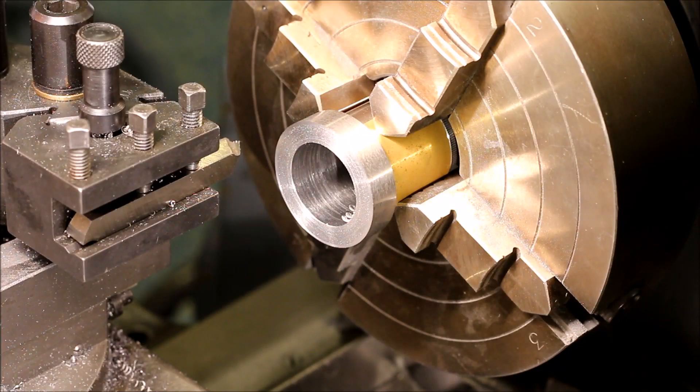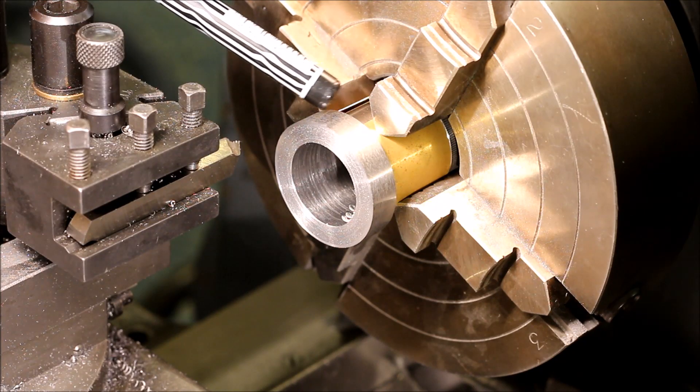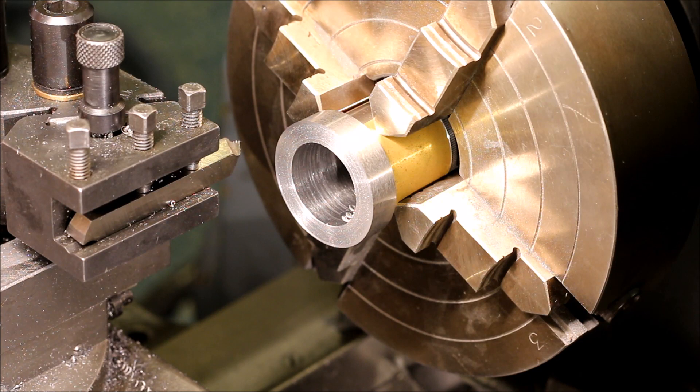Now we need to face off this flange so the width will be 7.9mm. When it's faced off, we will make a 5 degree chamfer on it. Let's go!